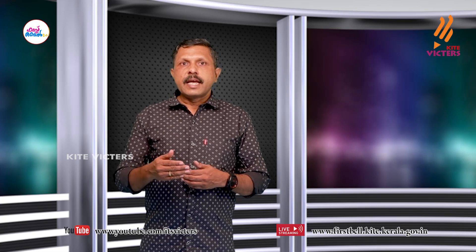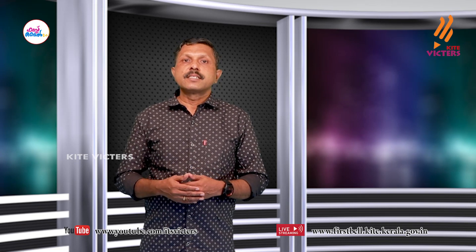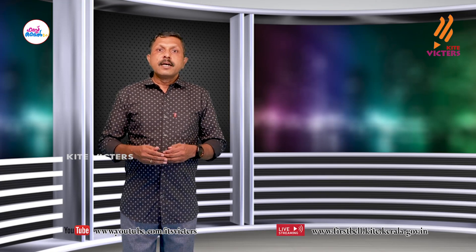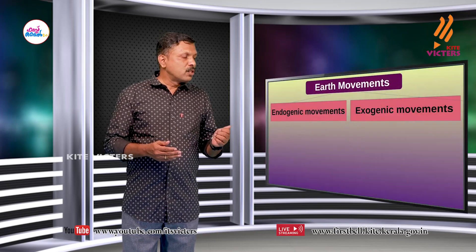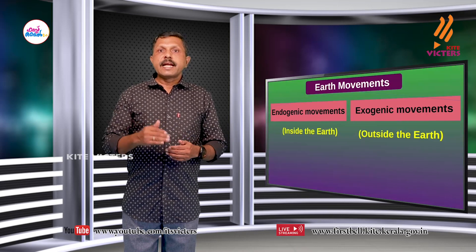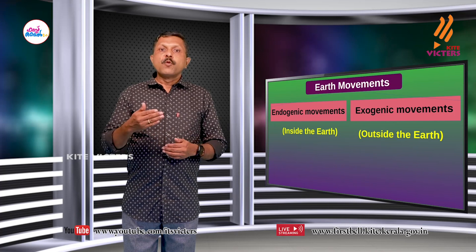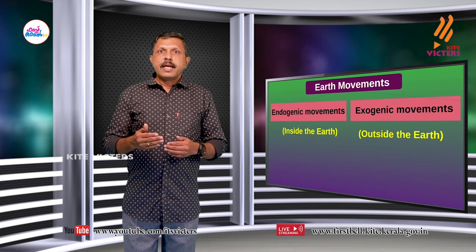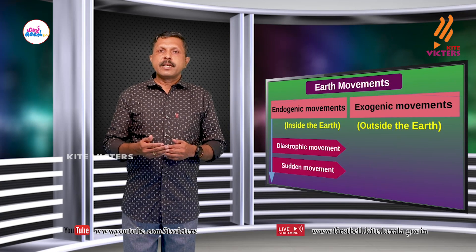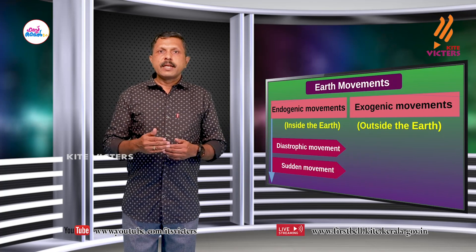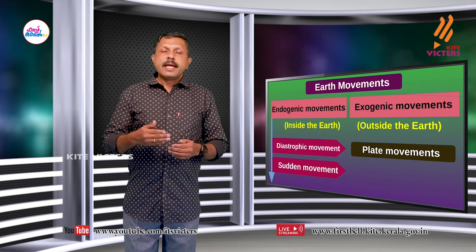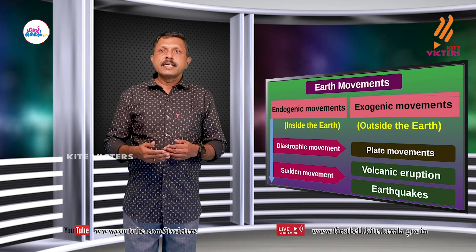Let's see the other forces that bring about changes on the Earth's surface. Most landforms on the Earth's surface are the result of such Earth movements. The Earth movements are of two types: endogenic movements and exogenic movements. Endogenic movement happens inside the Earth and exogenic movement means movement that happens outside the Earth. Endogenic movements are again divided into two: diastrophic movement and sudden movement. Diastrophic movement means slow movement; an example is plate movements. An example of sudden movement is volcanic eruption and earthquakes.